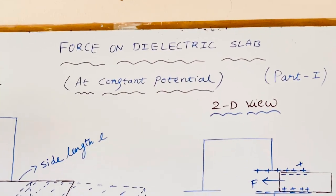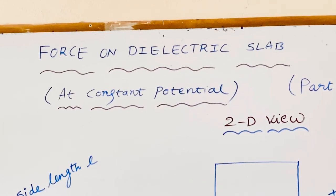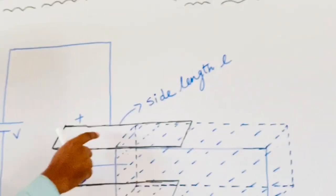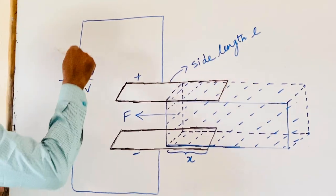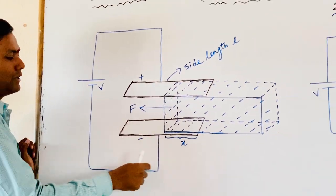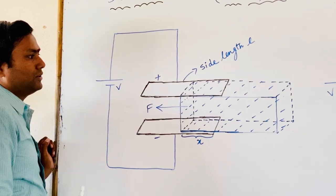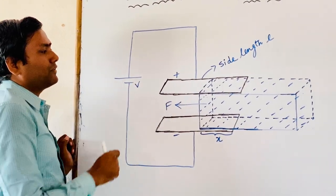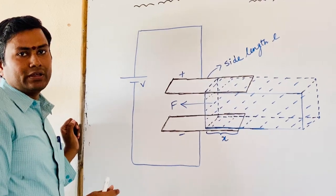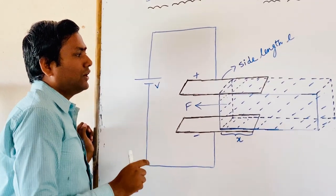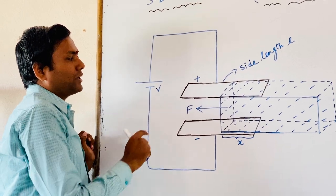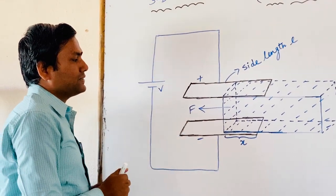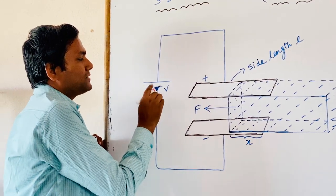First of all, take one capacitor. This capacitor is initially uncharged. In order to charge it, connect this capacitor — this plate to the positive terminal and this plate to the negative terminal. After connecting this capacitor to the terminals of the battery, the capacitor starts to charge. After some time, the capacitor plate attains the potential difference that is same as that of V.